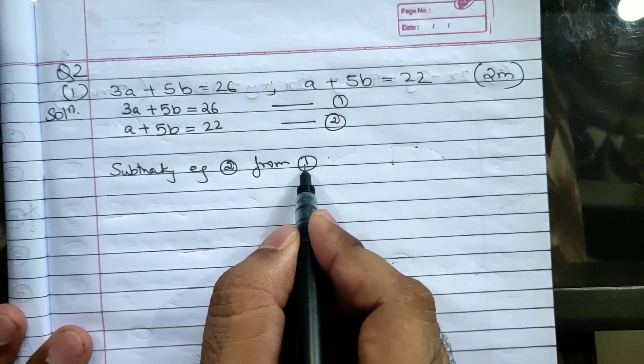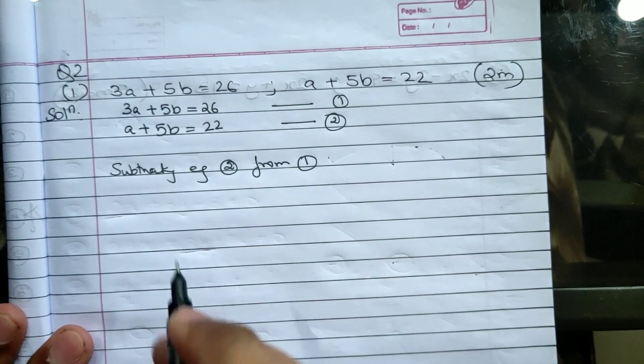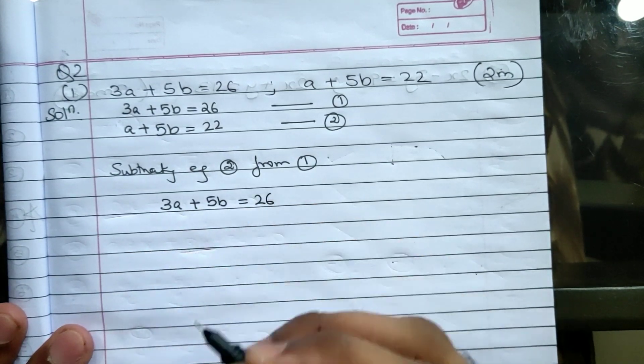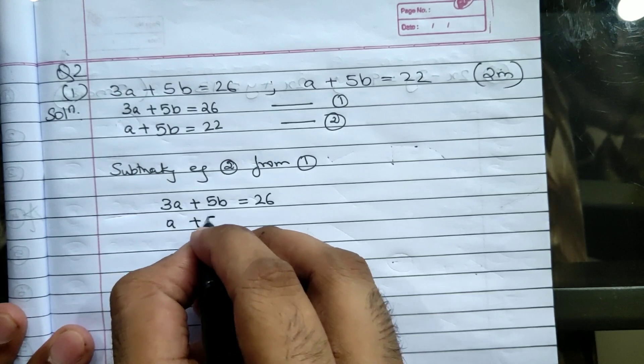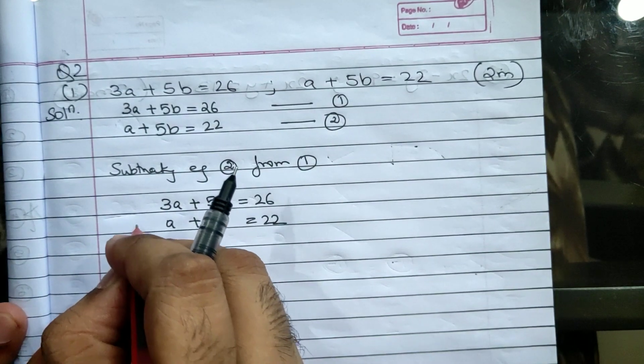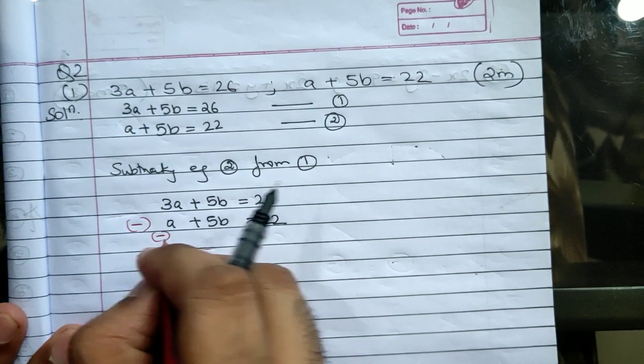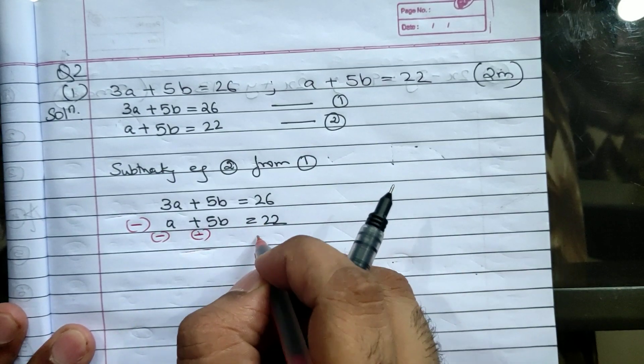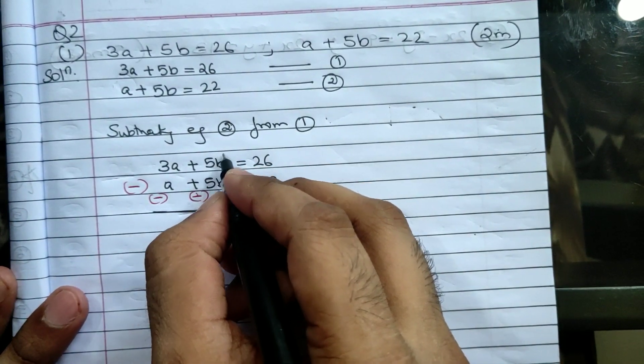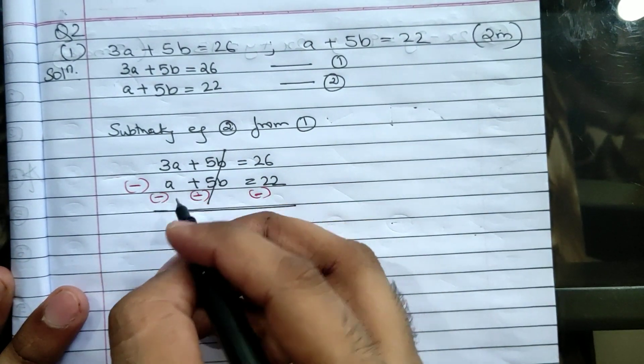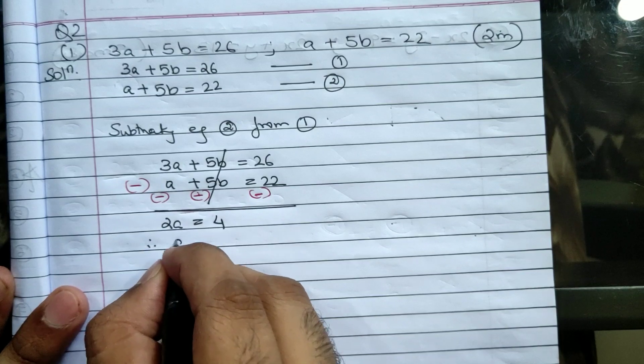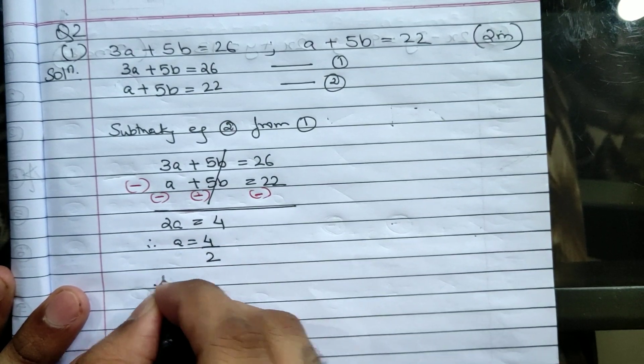Let us write - subtracting equation 2 from 1. When we write 2 from 1, we write 1 first and 2 later. So equation 1 will be 3a plus 5b equals 26 minus a plus 5b equals 22. When we subtract all signs change to minus.